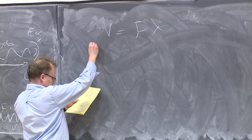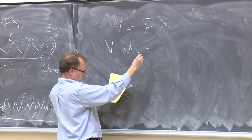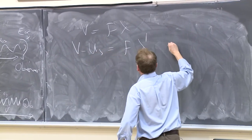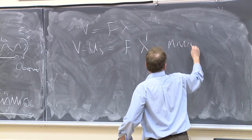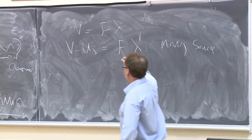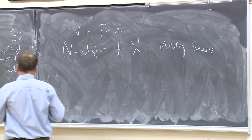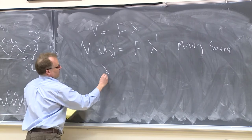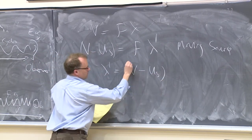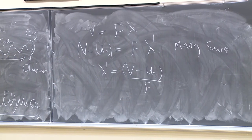So we would have v minus US equals f lambda prime. So this would be for the moving source. So it would be a shorter distance. And this is going to tell us that lambda prime is equal to v minus US divided by f.